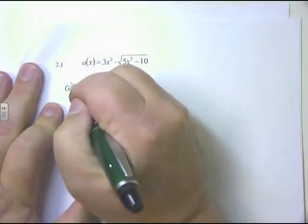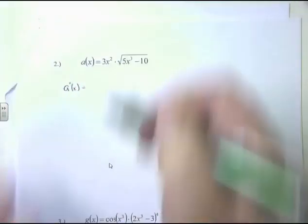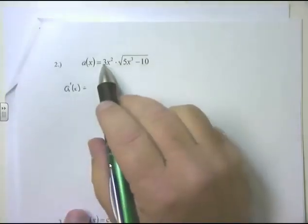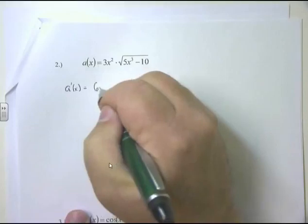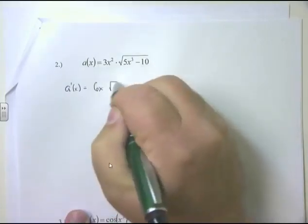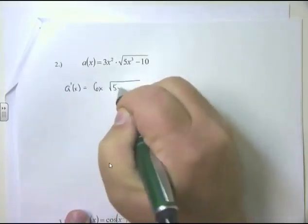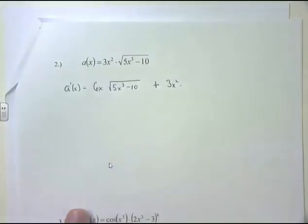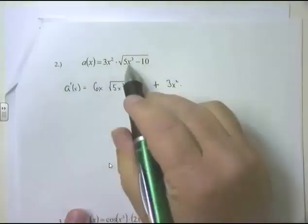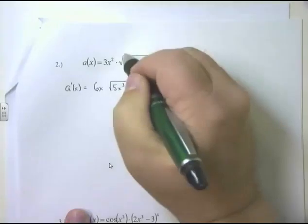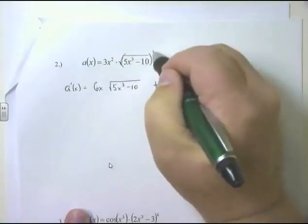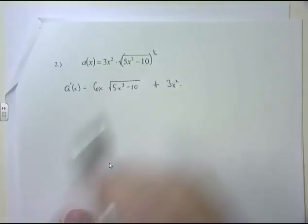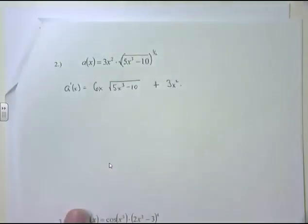So a'(x) equals product rule: derivative of the first times the second plus the first times the derivative of the second. The derivative of 3x² is 6x, times the second, the square root of 5x³ - 10. Plus the first, 3x², times the derivative of the second. The square root of 5x³ - 10 — we don't do square roots, that's a half power, and that half power is on the outside with 5x³ - 10 on the inside. So to take the derivative of the second, we use the chain rule.